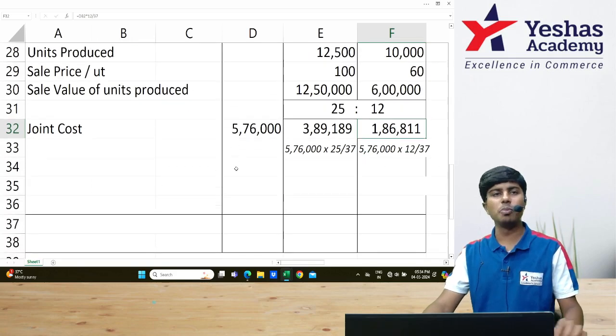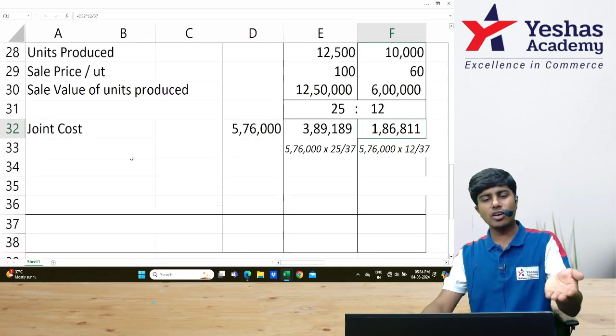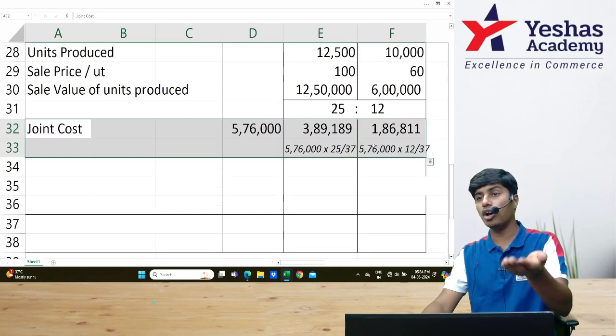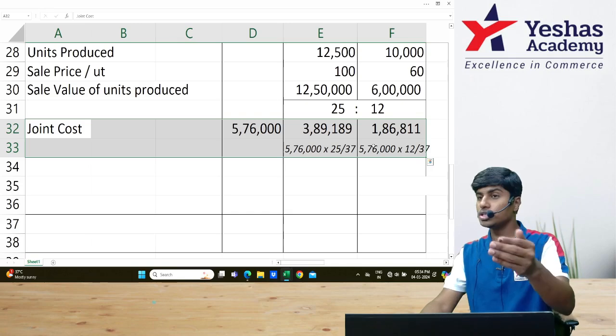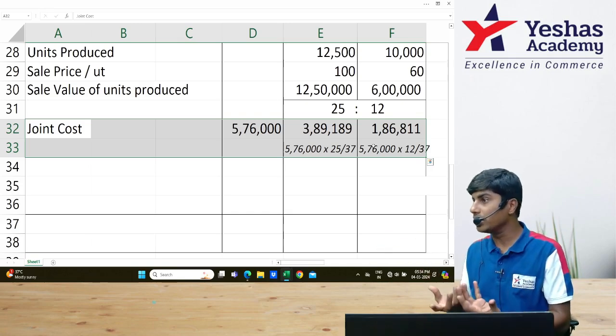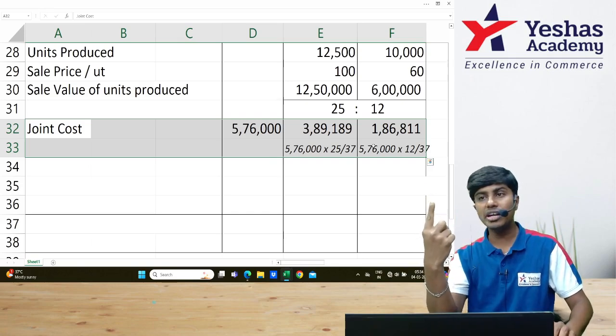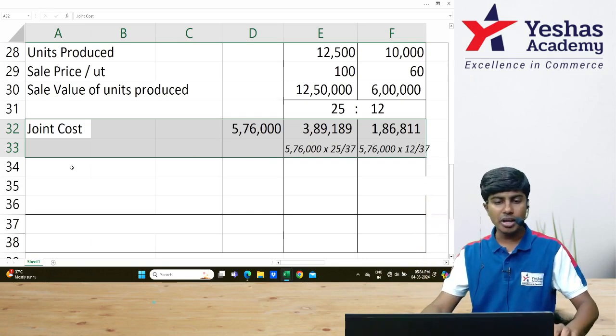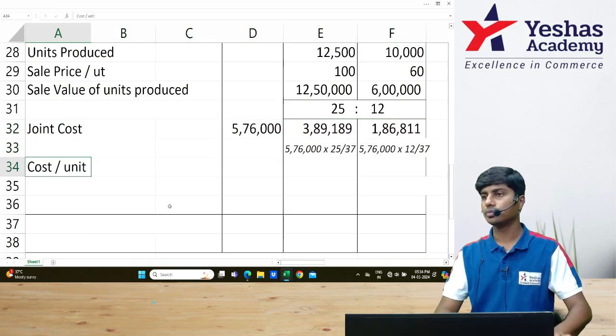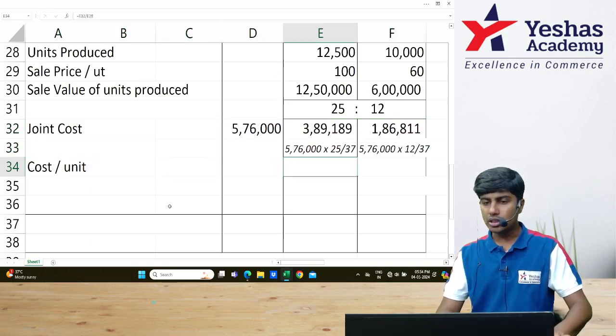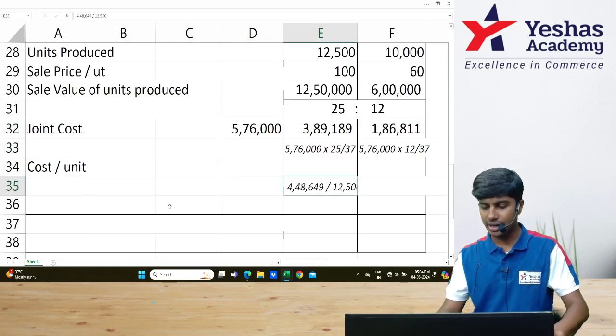After I allocate it to both products, I cannot record them at this price. This is the cost for units produced. Closing is not the entire production. Certain units are sold. Let me identify the cost per product. How many units were produced? 12,500.